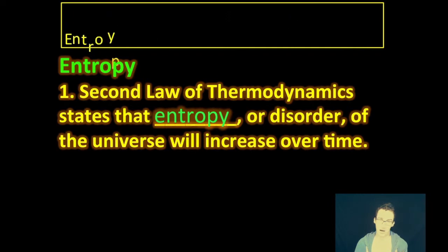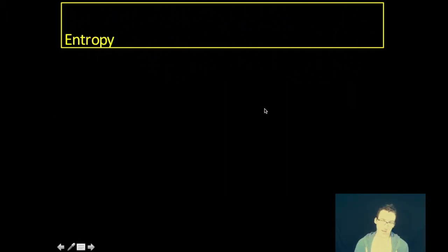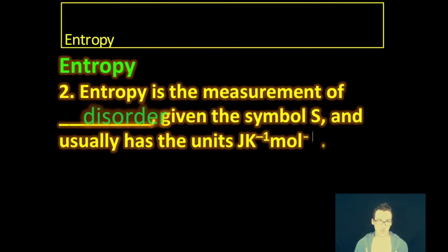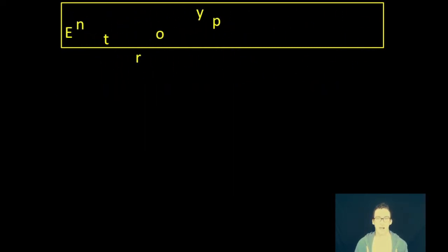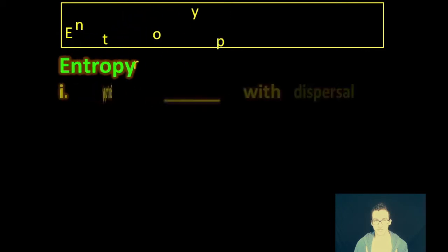Well, the second law of thermodynamics states that entropy or disorder of the universe is going to increase over time. But what is entropy? What does that mean? Well, entropy is essentially just a measurement of the disorder of a system, and that is usually given the symbol S and has the units joules per kelvin mole or mole per mole kelvin.